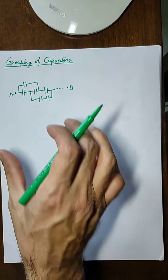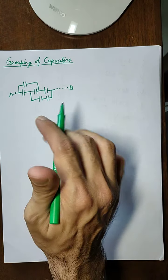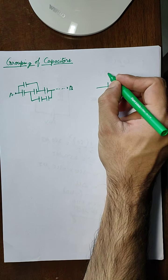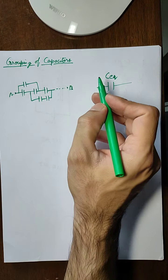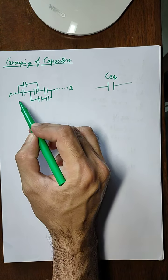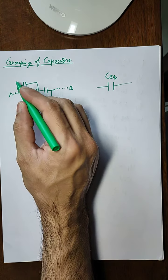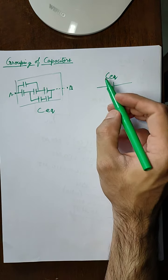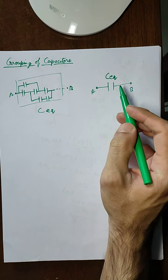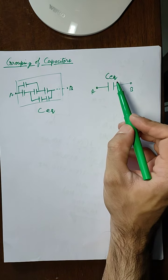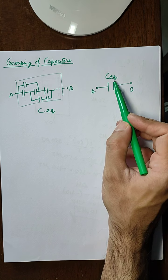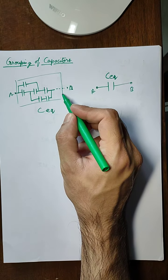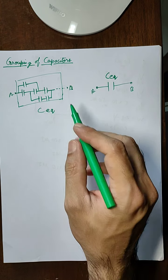When these capacitors are grouped together, they can be replaced by one capacitor whose capacitance is C equivalent, which will be equal to the total capacitance of this circuit. This circuit will behave as if all these capacitors are replaced by one capacitor whose capacitance equals the combination of these capacitors. Our prime target when we group capacitors is to solve the circuit.